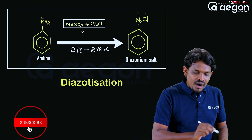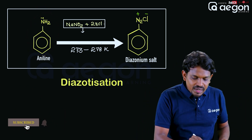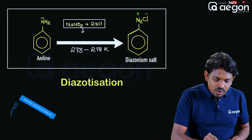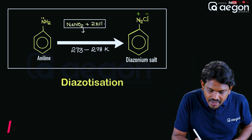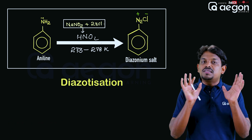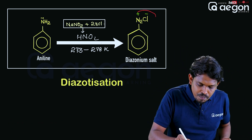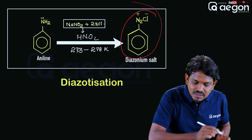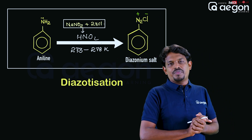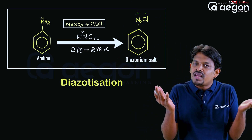Aniline is a primary amine. Aniline reacts with NaNO2 and HCl. The product of this reaction is benzene diazonium chloride, that is a diazonium salt. This reaction process is called diazotization.